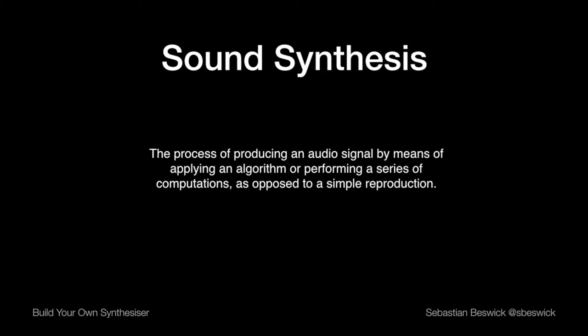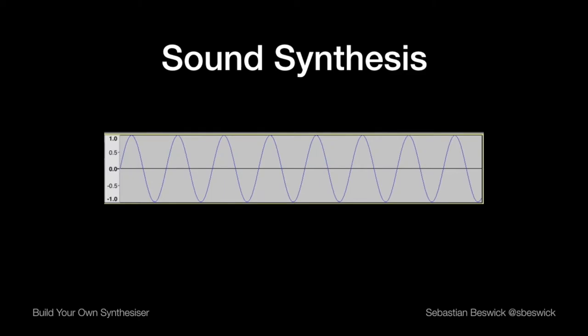We can generate PCM audio using a microphone, but we can also achieve the same result without one by carefully producing a stream of samples algorithmically — and this is the process we call sound synthesis. Sound synthesis is the process of producing an audio signal by applying an algorithm or performing a series of computations, as opposed to reproducing an existing real-world sound. For example, you can generate a synthesized sound by producing samples of the amplitude of a sine wave changing over time, resulting in what we call a sine tone. Sine tones are interesting because the only frequency present is the frequency of the sine wave — giving them the purest timbre.